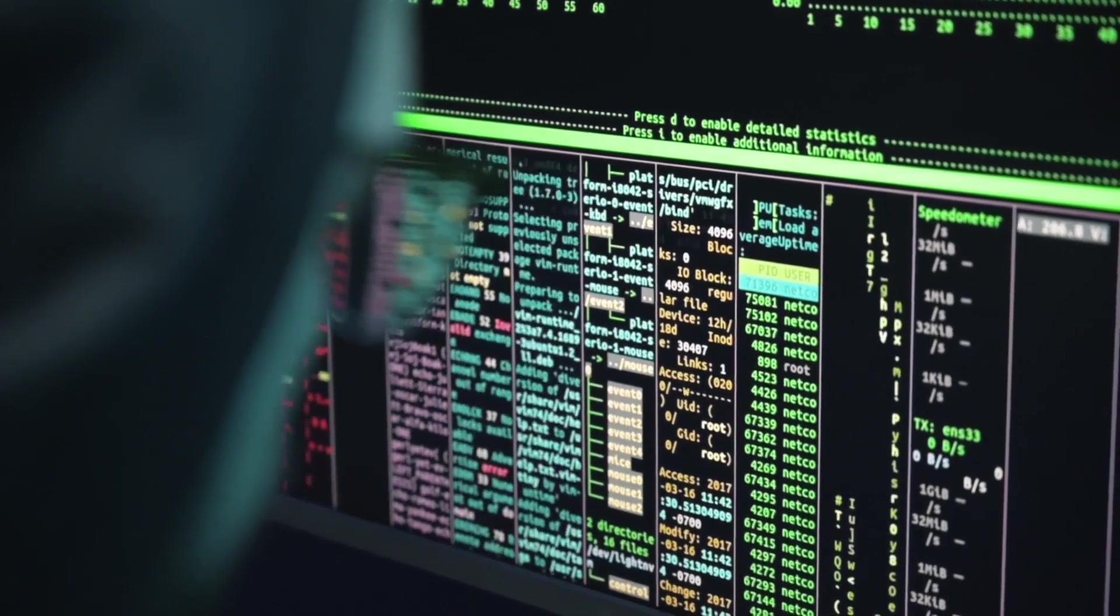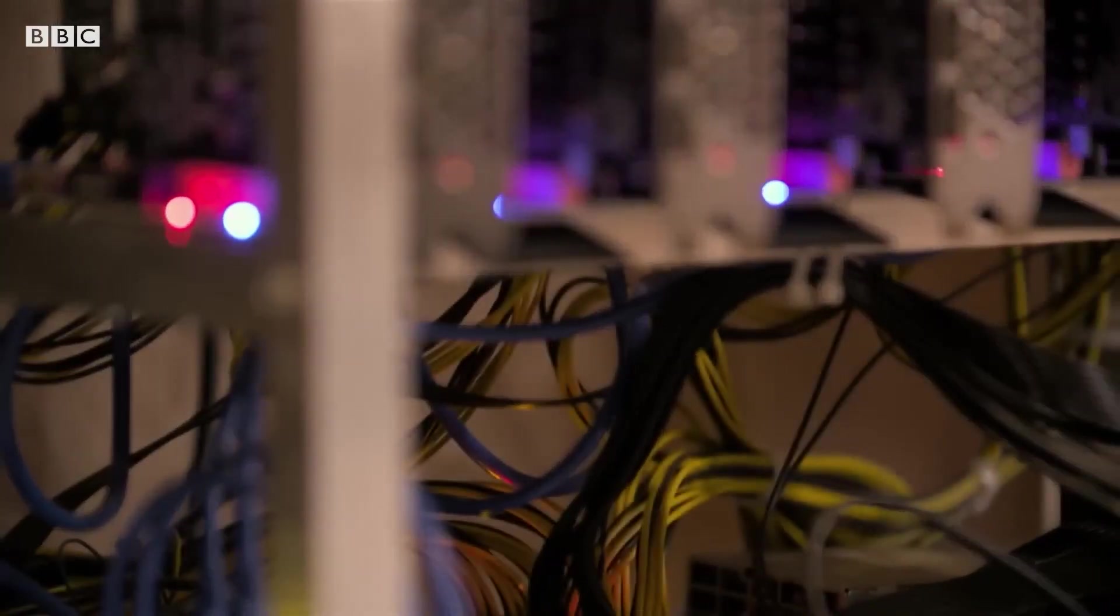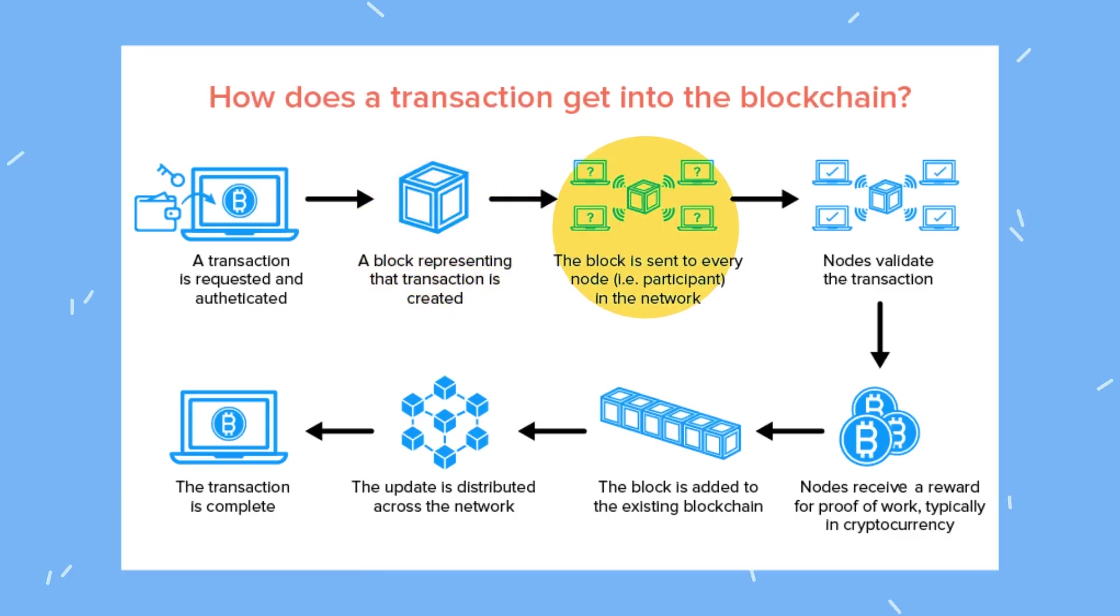this means that computers in the network have to solve a puzzle in order to add your transaction to the log and update the info for all the other members of the network. What crypto miners do is run these computers that solve algorithms and keep the crypto network working. For computational work that these computers do, miners get a small amount of cryptocurrency for helping to secure the system. This way, everyone agrees on the history of transactions, making it nearly impossible to cheat.